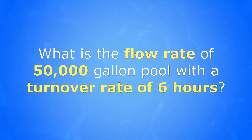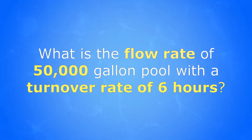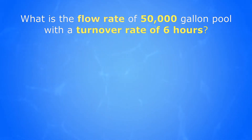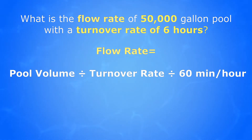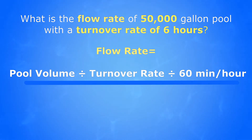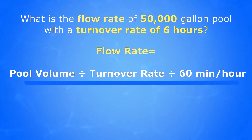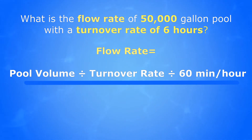First, we need to look at what we're calculating. We're calculating flow rate. So we need to look at the flow rate formula. FR, or flow rate, is equal to our volume divided by the turnover rate, divided by 60, which is part of our formula.